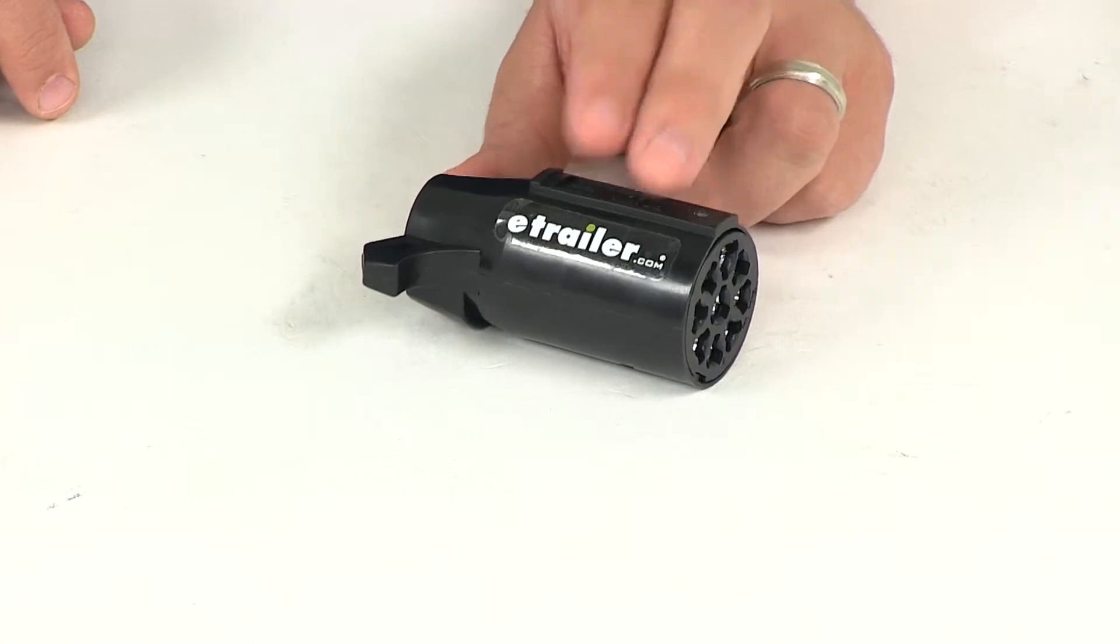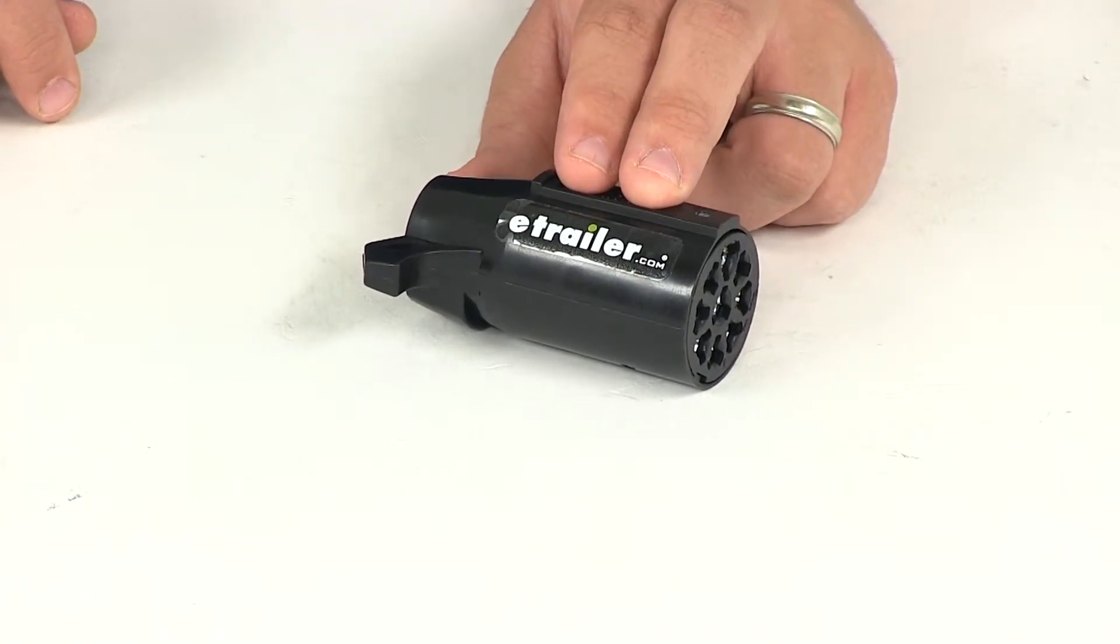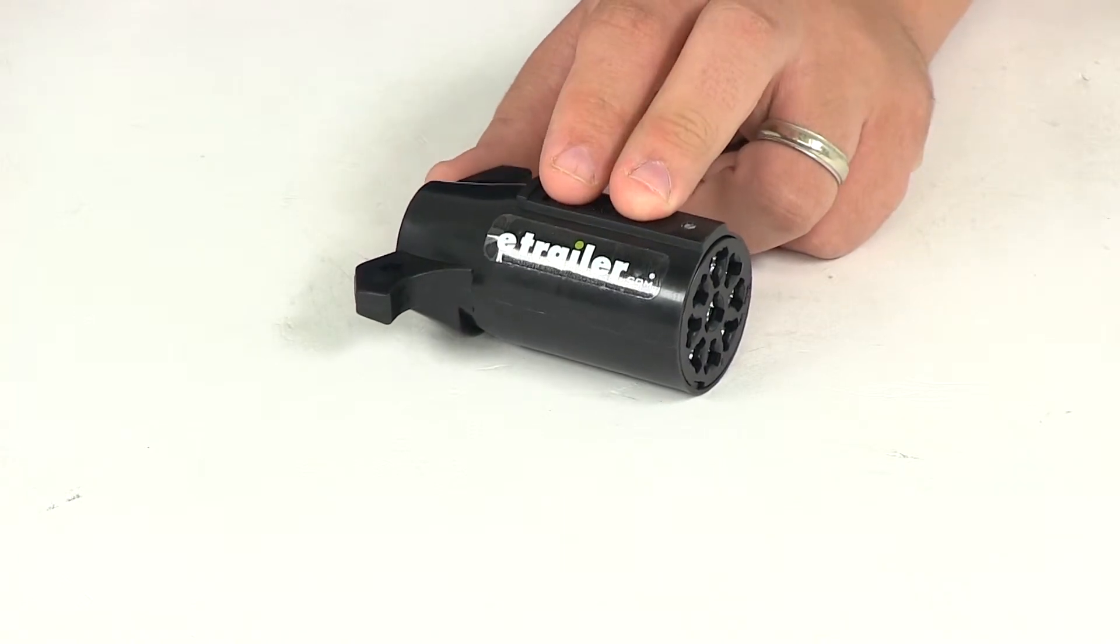Black is battery charge, 8-gauge. Red is stop and left hand turn signal, 14-gauge. Brown is stop and right hand turn signal, 14-gauge.